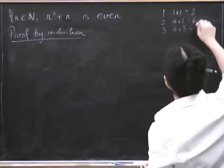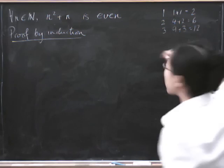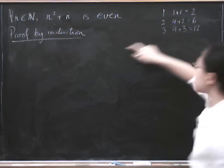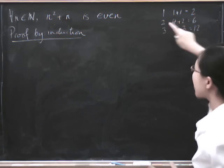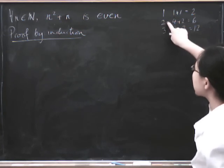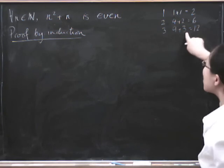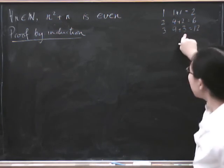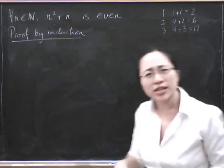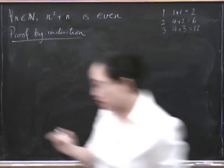So perhaps you can see why it's true without using induction, which is that if n is even, then both of these things are even. And if it's odd, both of these things are going to be odd, in which case we'll get something even out. Well, let's prove it by induction.